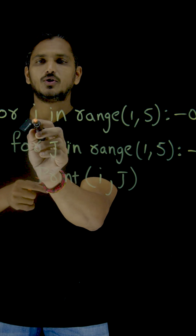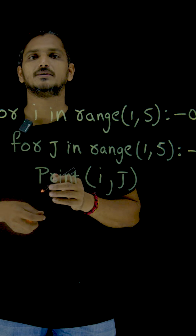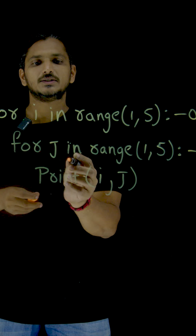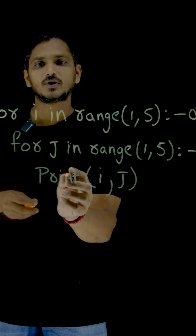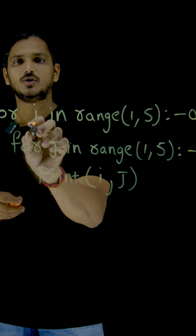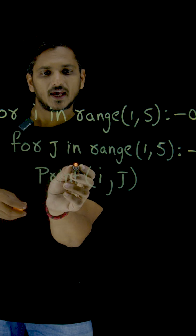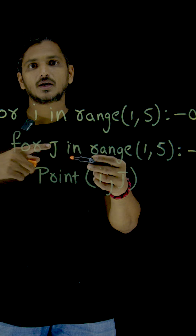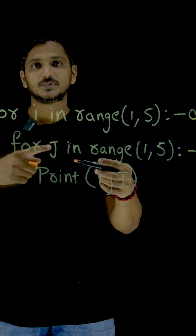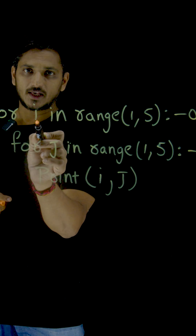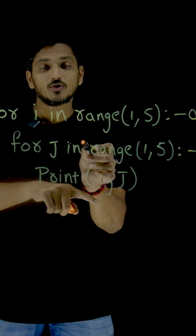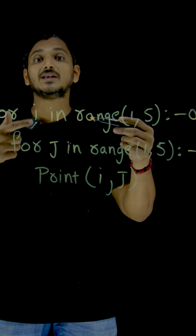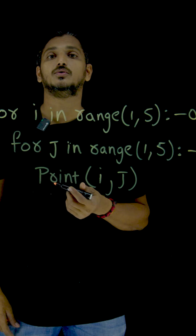With i equal to 2, again execute the loop — it has to complete again 4 times. With i equal to 3, again this inner loop has to execute a complete 4 times. With i equal to 4, again this inner loop has to execute 4 times. This is how it is going to execute.